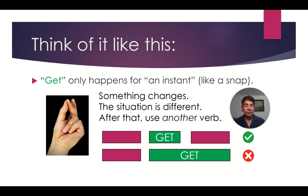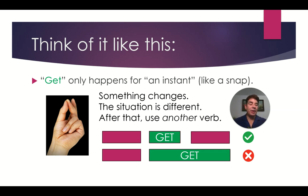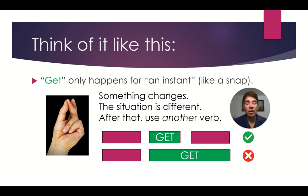The situation is different. After that, we use another verb. For example, something happened, then GET changes the situation, and then something new is in place. With GET, it does not occur for a long time. It changes, and then we go on to another verb.